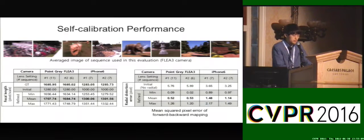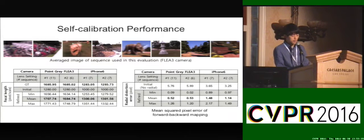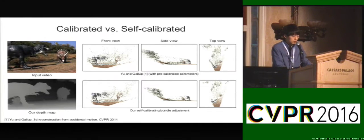We validate our self-calibration by comparing the estimated focal length and radial distortion with the ground truth camera model. For this experiment, we captured 31 small motion clips at 4 different lens settings using a point-grade machine vision camera and an iPhone 6 camera. At each setting, the ground truth was obtained using a checkerboard-based calibration approach. These tables show our method can estimate reliable intrinsic parameters from various small motion clips at different lens settings of different cameras. We also compared point clouds reconstructed by our bundle adjustment with those from a previous method. Even without any prior camera information, the results were almost the same, while the previous method used ground truth intrinsic parameters.